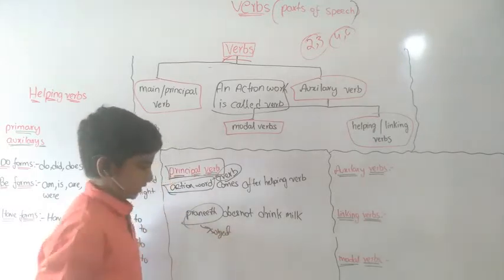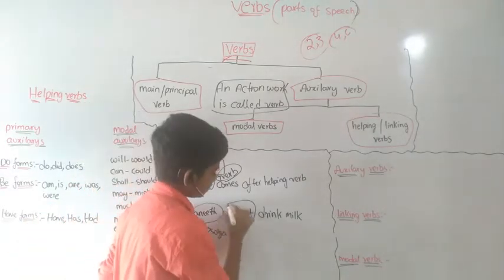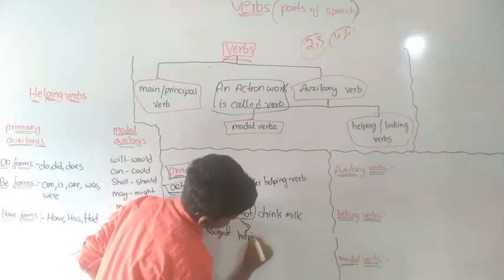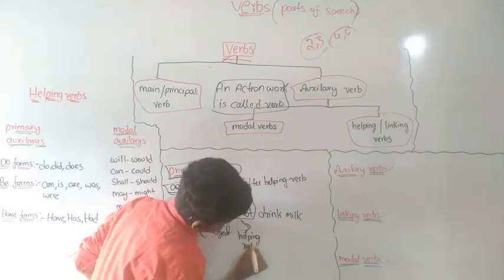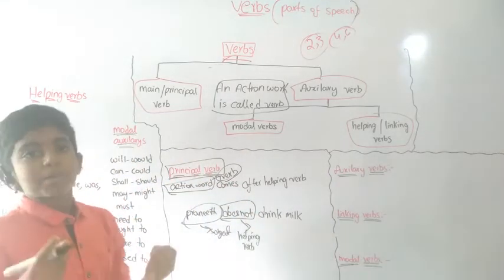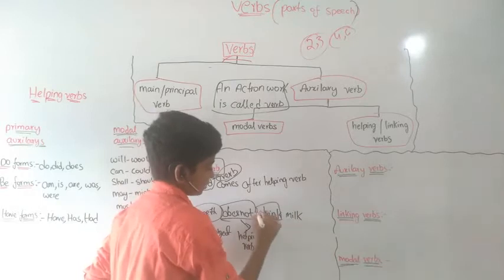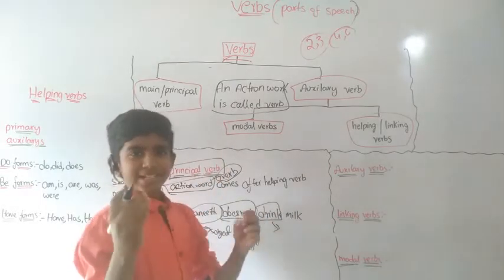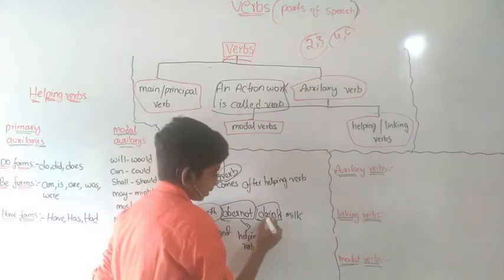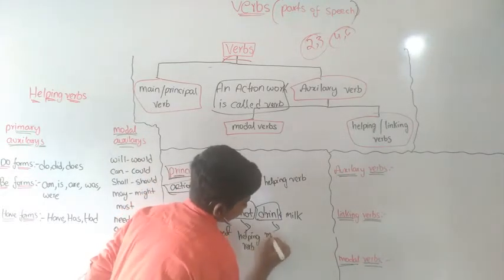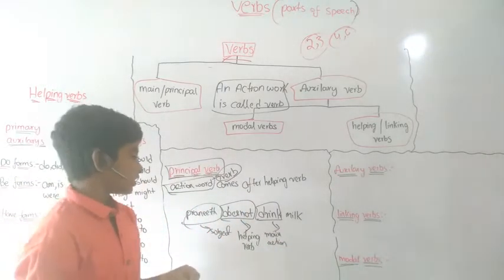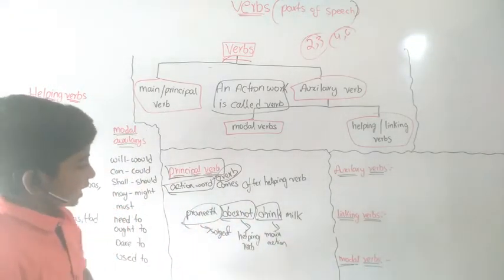In the sentence 'Praneeth does not drink milk,' Praneeth is the subject. Does not is the helping verb. The main verb or principal verb here is 'drink.' Drink is the main action of the subject. So drink is the main verb, that means the main action.